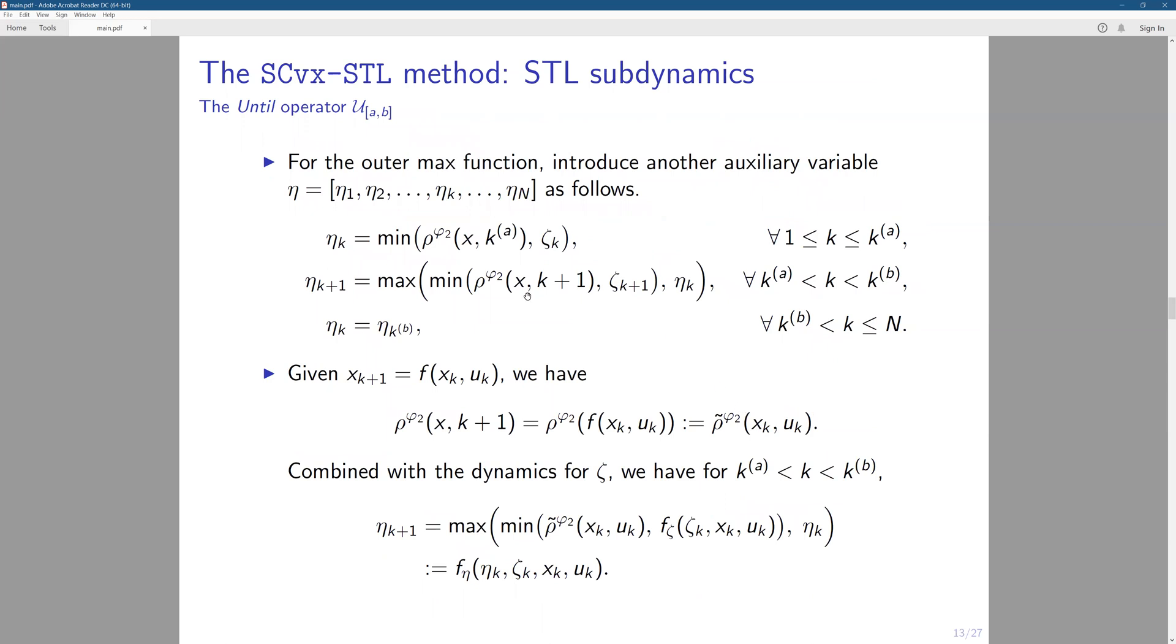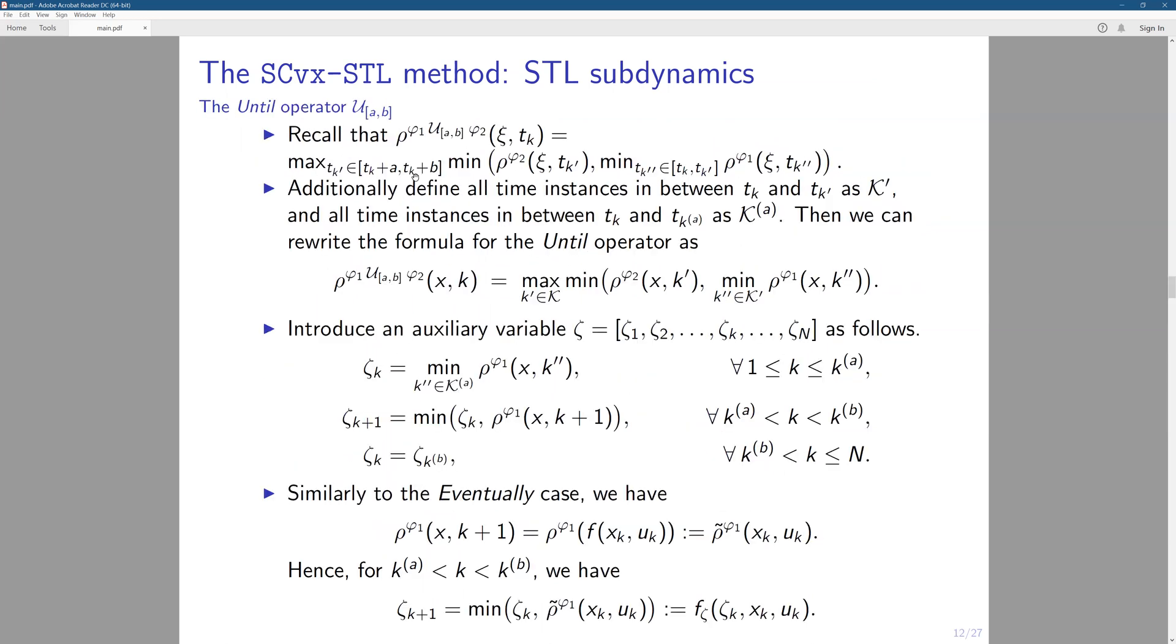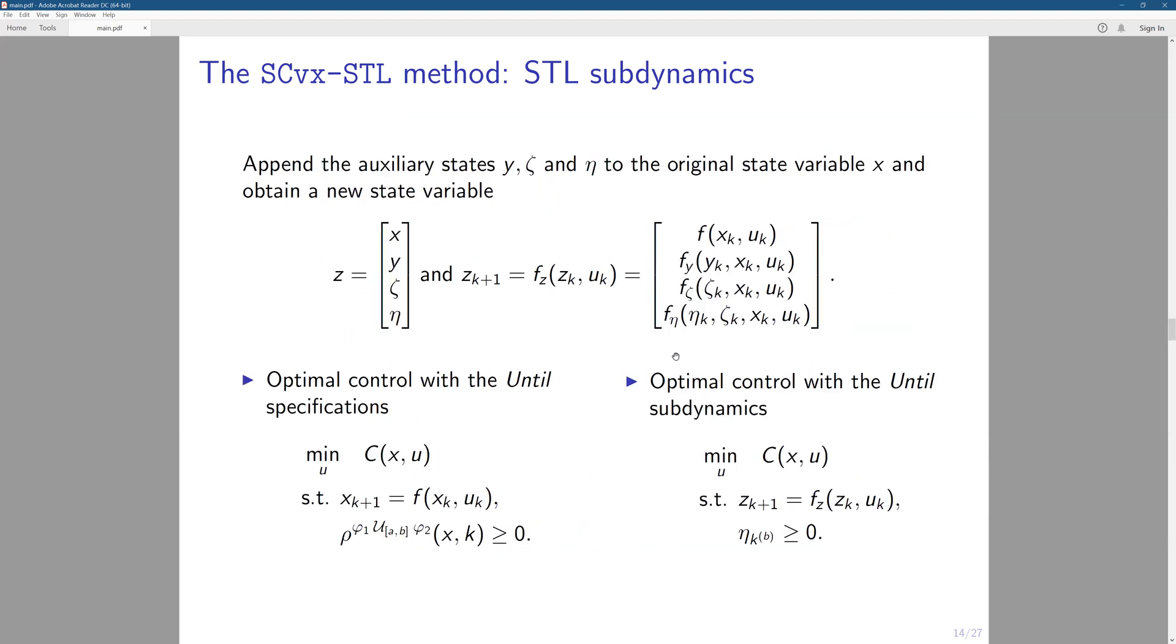The same thing goes for the auxiliary variable for the anterior operators. So we have zeta. So recall that we have two terms here. So after that, we can rewrite our equations as this. So this is big equation that captures the whole previous dynamics and the sub-dynamics we have introduced. And we can rewrite our previous problem into a problem with the STL sub-dynamics with this additional state constraint.